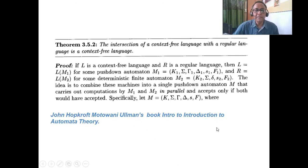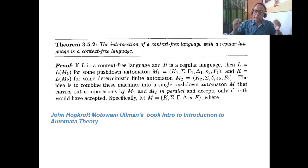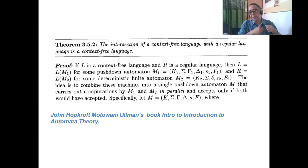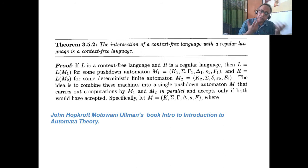One interesting thing: the intersection of a context-free language with a regular language is a context-free language. The rules of regular language are closed, but the problem comes with context-free. The intersection of two context-free grammars may or may not be context-free; the complement of a context-free grammar may or may not be context-free. Context-free grammar behaves very differently than regular grammar.